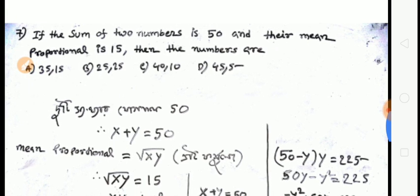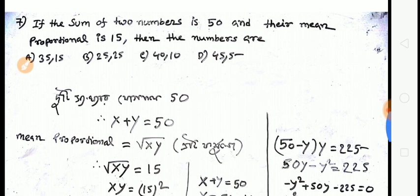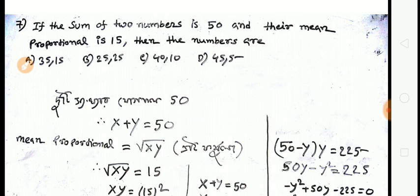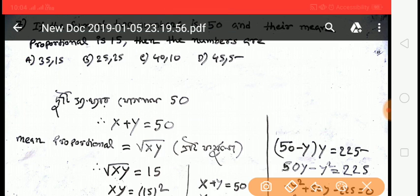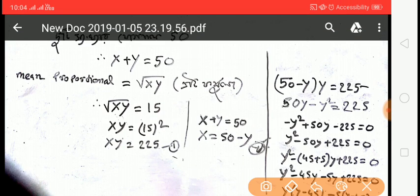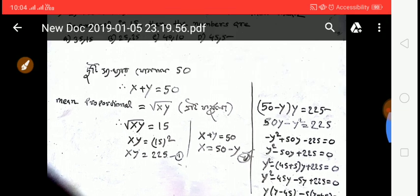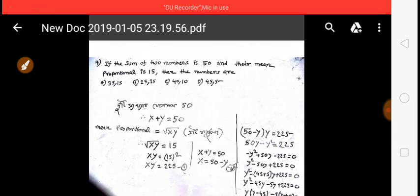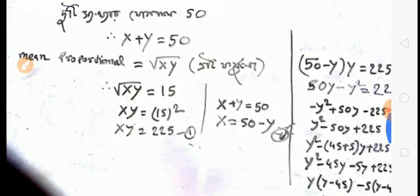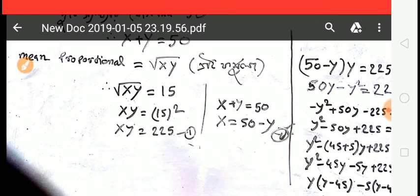Next question: if the sum of two numbers is 50 and their mean proportion is given, find the numbers. Mean proportionate formula = root over x into y. So x + y = 50 and mean proportionate = √(xy).